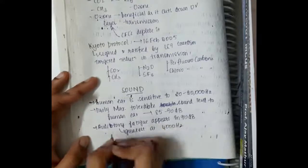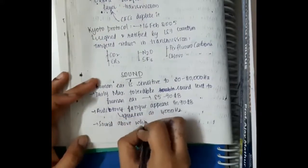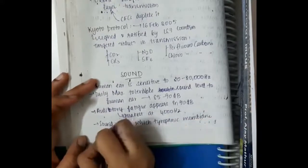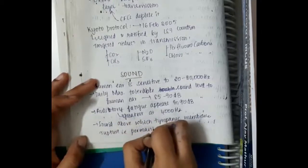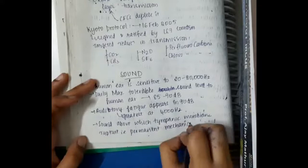Auditory fatigue occurs at 90 dB and 4000 Hz. Sound above which the tympanic membrane rupture occurs, that will lead to permanent mechanical damage, is around 150 to 160 dB.